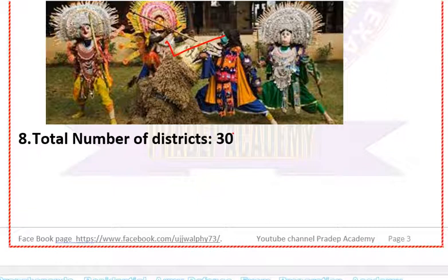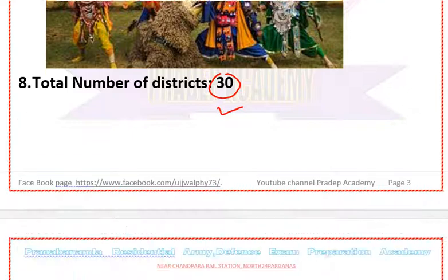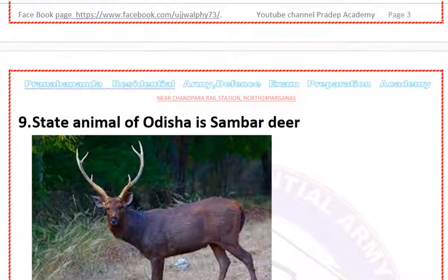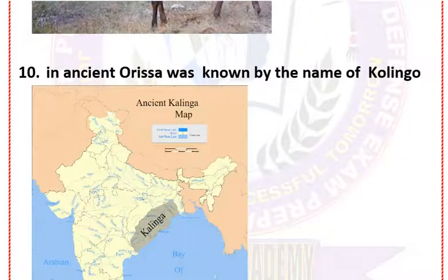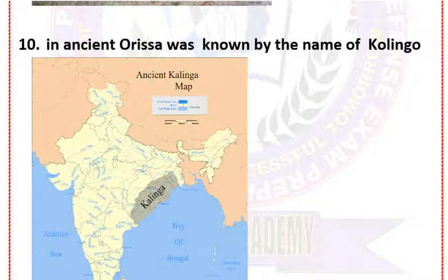The total number of districts in Odisha is 30. The state animal of Odisha is the Sambar deer. In ancient times, Odisha was known as Kalinga, as shown on the map.